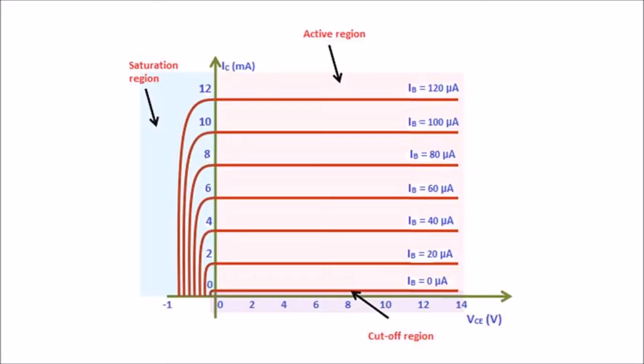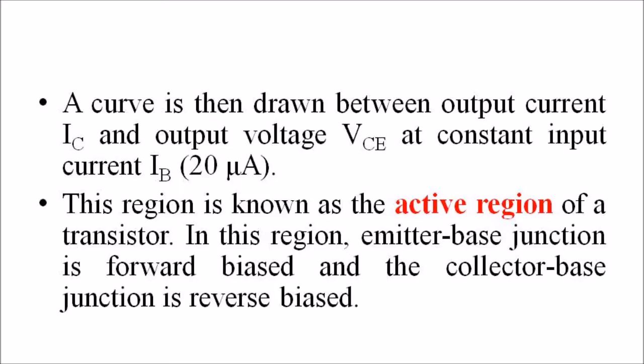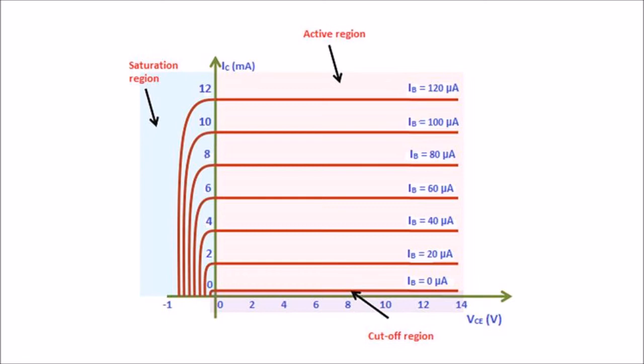Next, the input current IB is increased from 0 to 20 microamperes by adjusting the input voltage, and kept constant at 20 microamperes while the output voltage is held at 0V. Then the output voltage VCE is increased from 0V to different voltage levels, and for each level the corresponding output current is recorded. A curve is drawn between IC and VCE at constant IB of 20 microamperes. This region is known as the active region, where the emitter-base junction is forward biased and the collector-base junction is reverse biased. This step is repeated for different higher values of input currents.